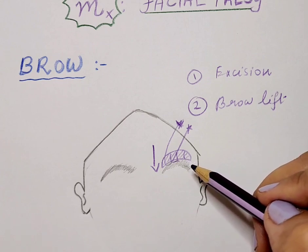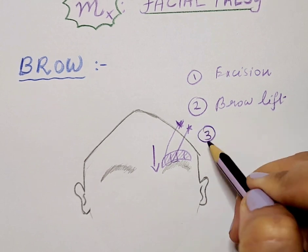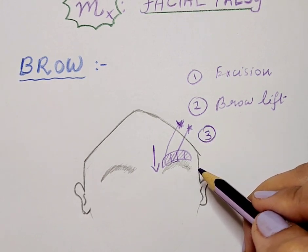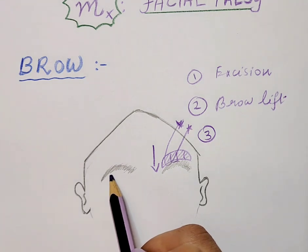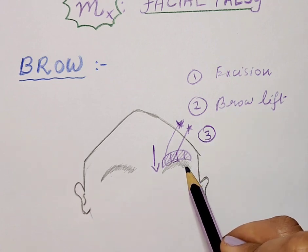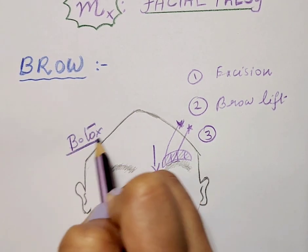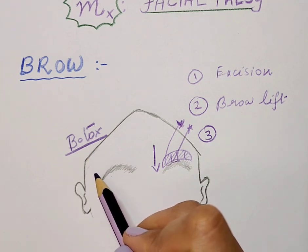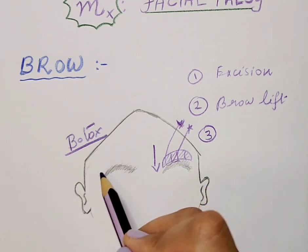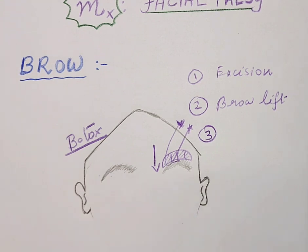Because brow ptosis causes significant asymmetry with the opposite side, in cases where surgery on the affected side alone is inadequate — or where surgery is not performed — botox can be injected on the opposite side. Botox temporarily weakens the strong frontalis muscle on the normal side, helping to create symmetry between both sides. That is an overview of what is done for brow ptosis in facial palsy.